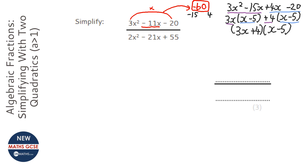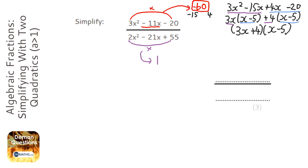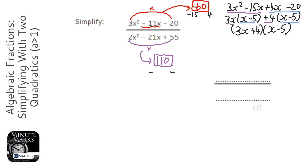The next thing we need to do is exactly the same thing again. We need to make 110. We need two numbers that times together to make 110 and add together to make minus 21. So we know both numbers will be negative. When the number is as high as 110, chances are it's just going to be 10 and something — so this will be minus 11 and minus 10.